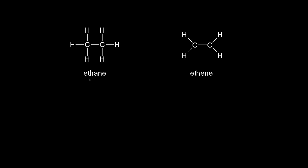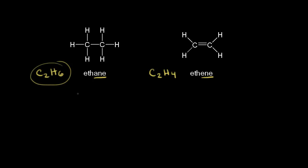Let's compare the structures of ethane and ethene. Ethane is an alkane with an A-N-E ending, and it has the molecular formula C2H6. Ethene is an alkene with an E-N-E ending, and it has the molecular formula C2H4. For two carbons, six hydrogens is the maximum number that you can have, so we say that ethane is completely saturated with hydrogens.